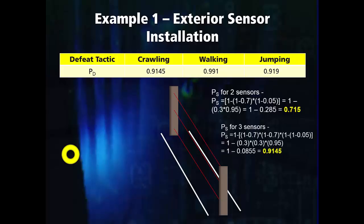The probability of detection of multiple complementary sensors is determined by subtracting the product of their non-detection probabilities from one. It is important to keep in mind that there is rarely ever one single detector that can detect all of the potential entry techniques that an adversary might use, and that combinations of detectors will typically provide a much more reliable detection probability when making sure to eliminate potential vulnerabilities.